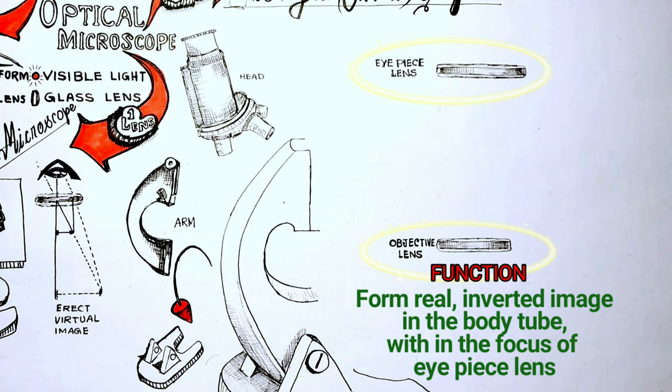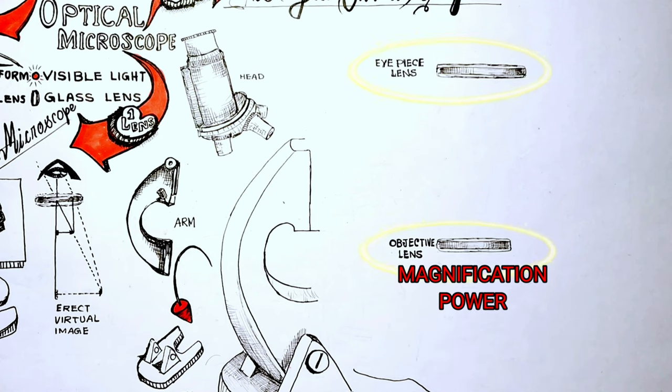Objective lenses with four different magnifications are generally used in compound microscopes. And they are 4x, 10x, 40x, 100x respectively.